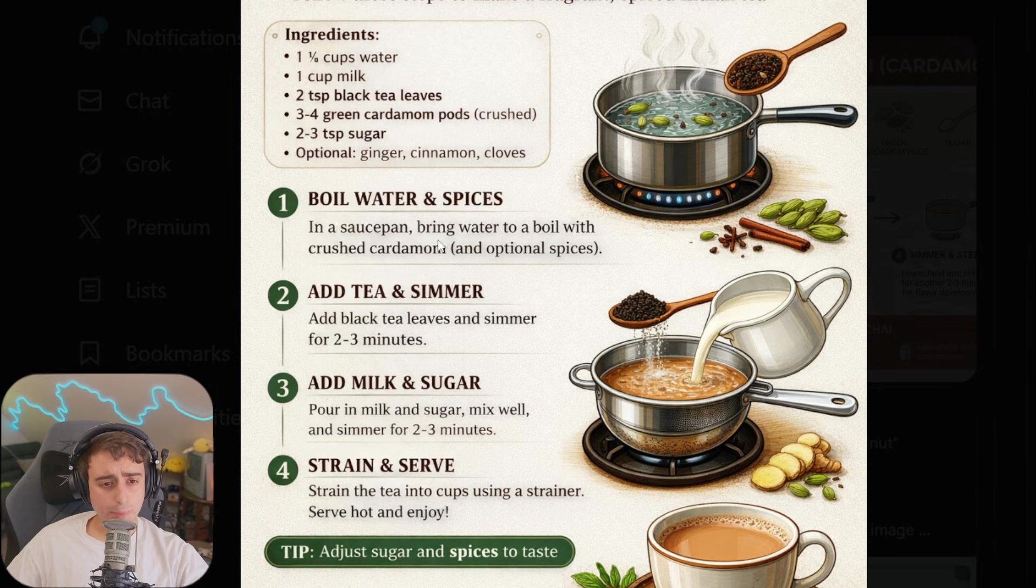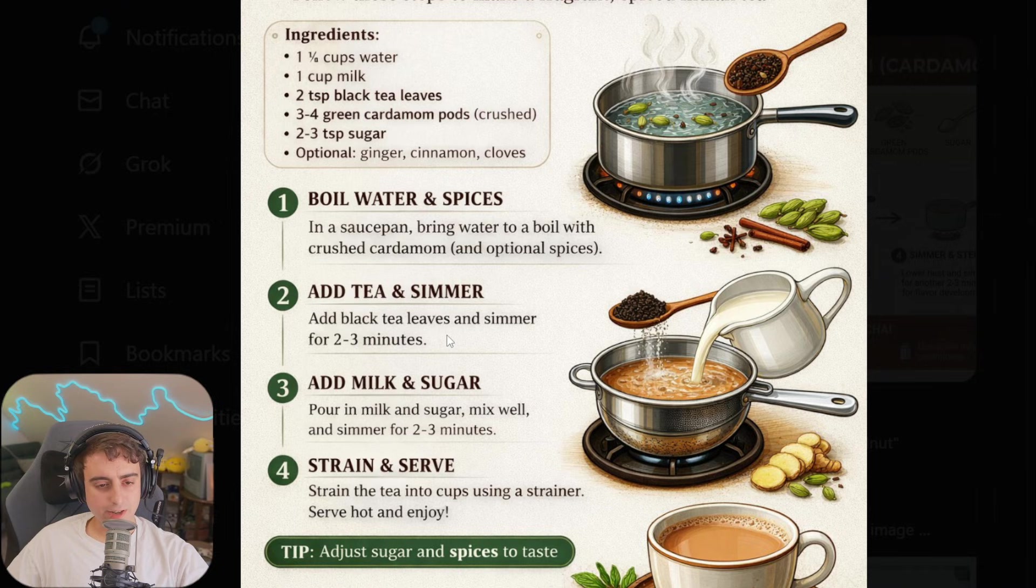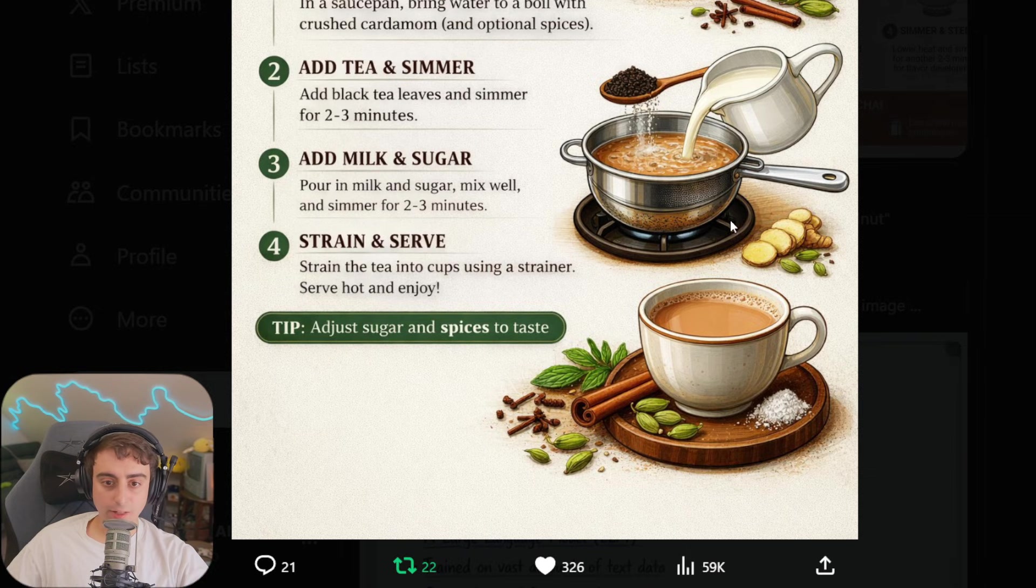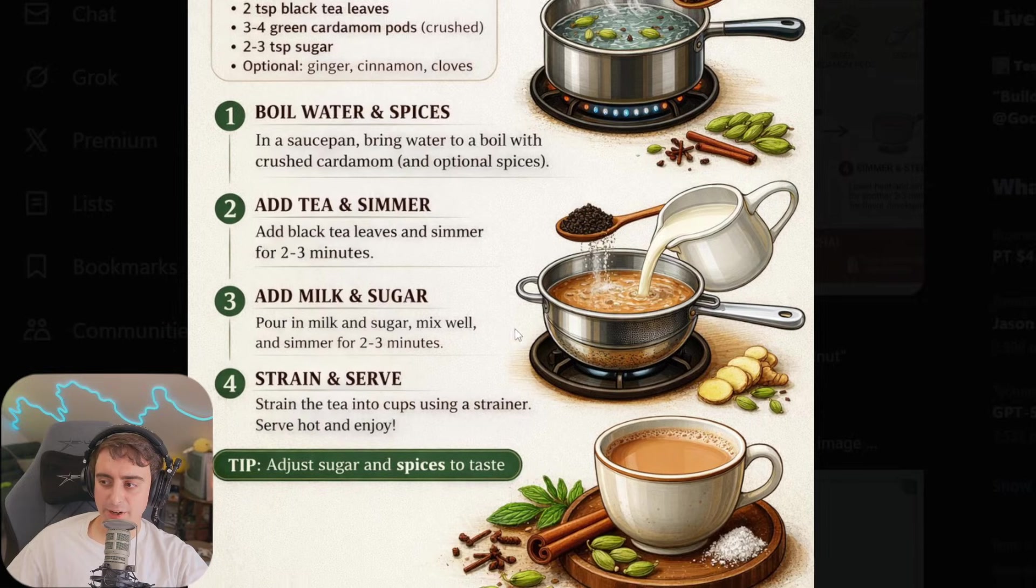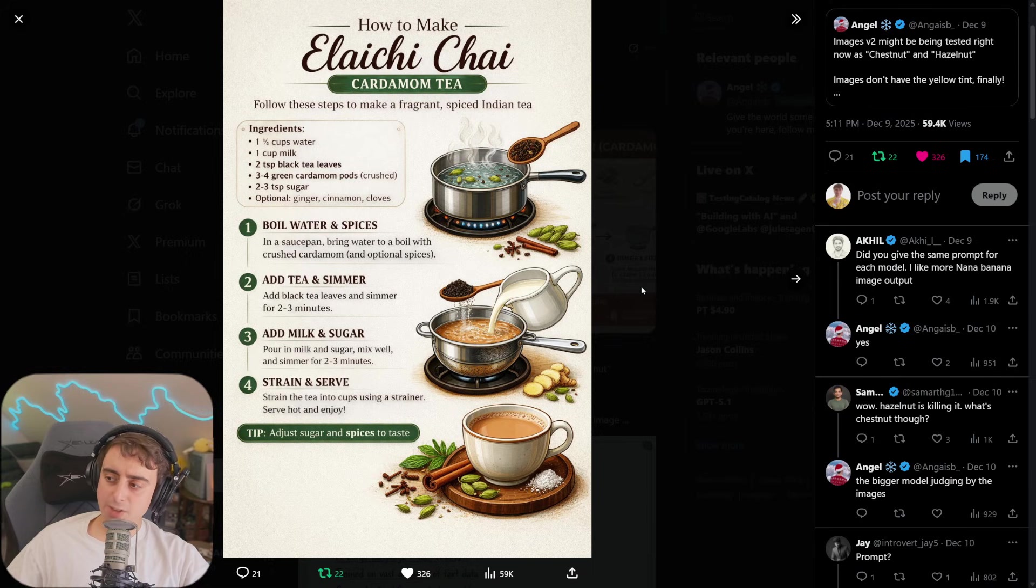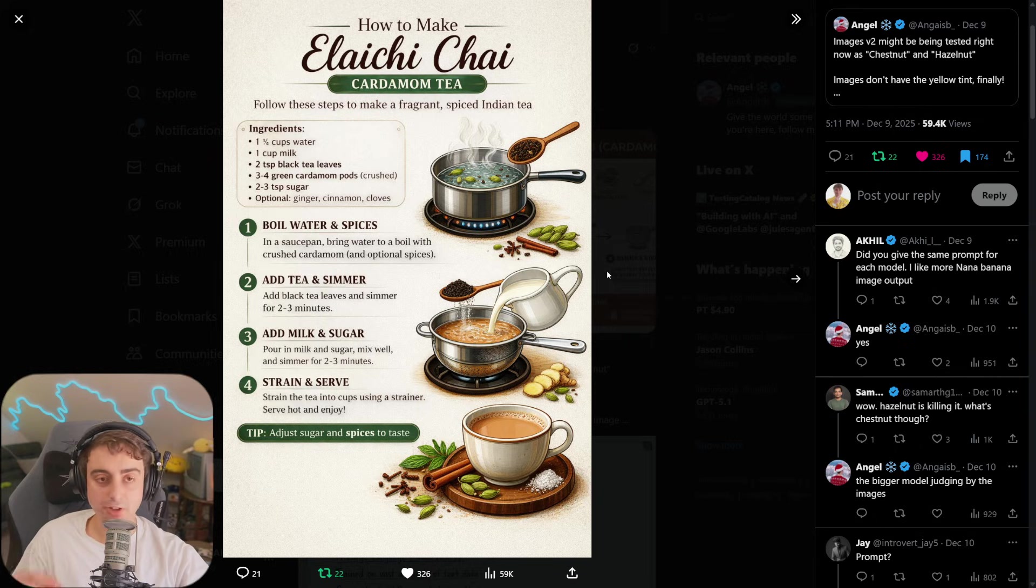Seem to be pretty sound ingredients for making a chai or a tea. In a saucepan, bring water to a boil with crushed cardamom and optional spices. Add your tea and simmer for 2 to 3 minutes. Add your milk and sugar. Strain and serve. It definitely crushed this recipe and I love all of the artistic little drawings. Doesn't really seem to have made any glaring mistakes, but this is a pretty simple recipe. This might actually be easier than the cell prompt.